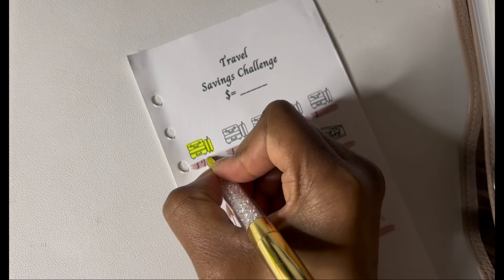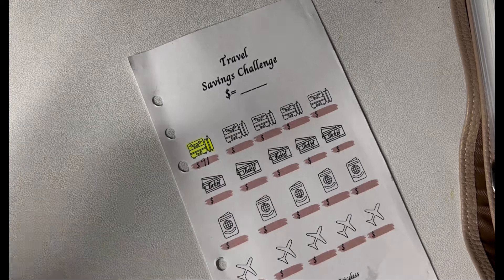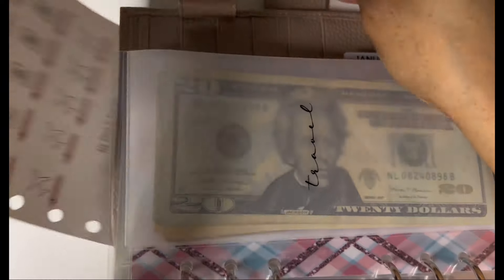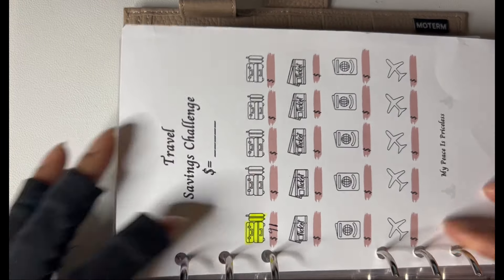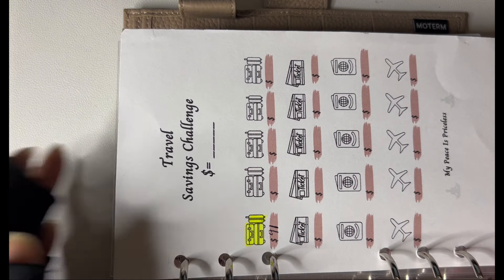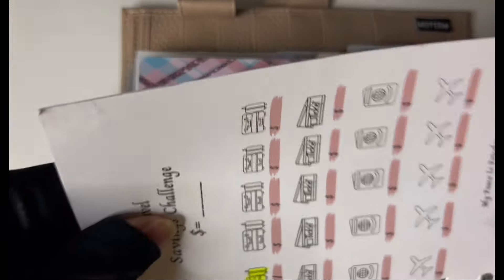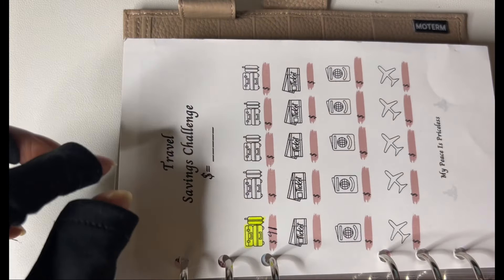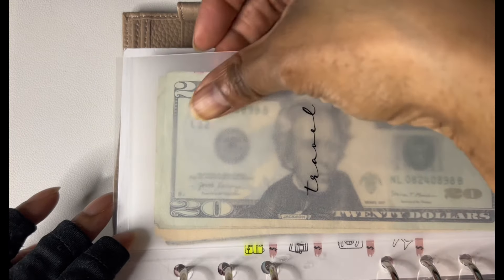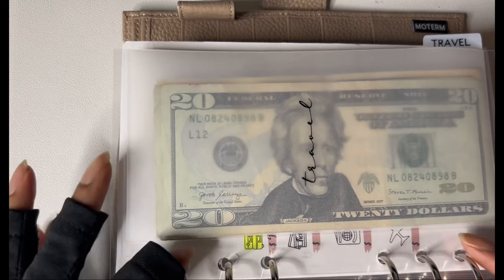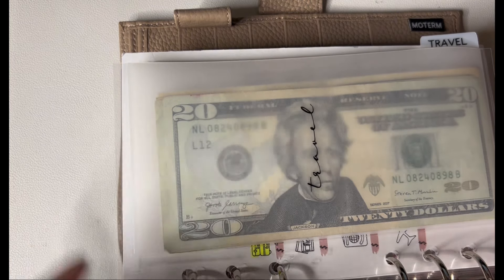So I'm just going to jot down $91. And I'll just put the tracker in front. Should I put it in front or behind? Let's see, this is how it looks in front of it. I like it both ways, but I'll keep it this way for now.